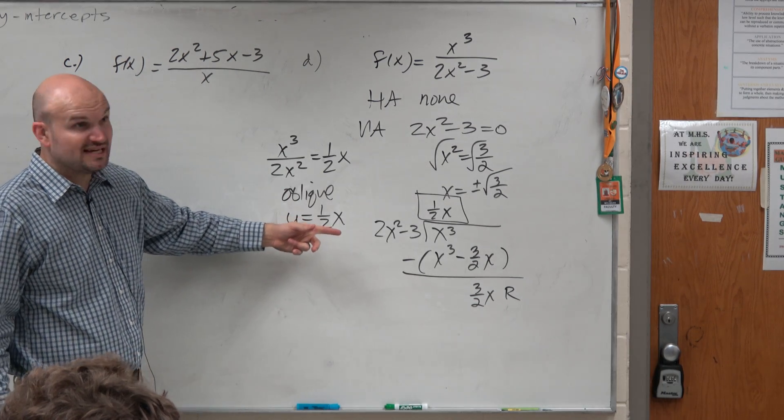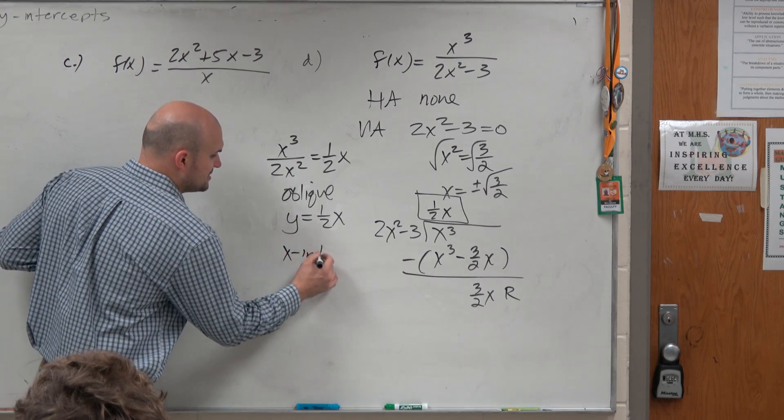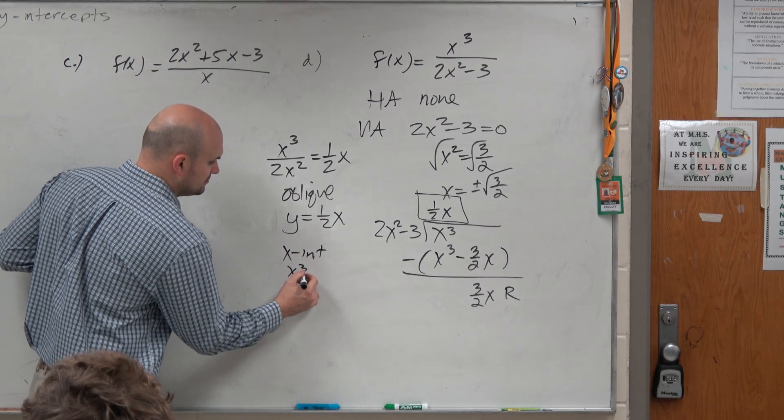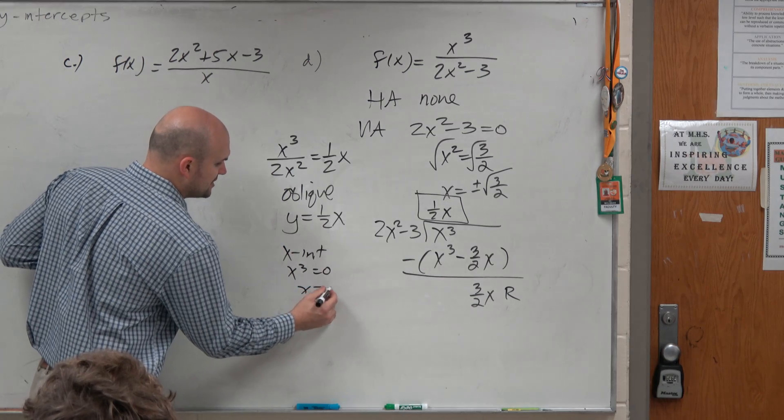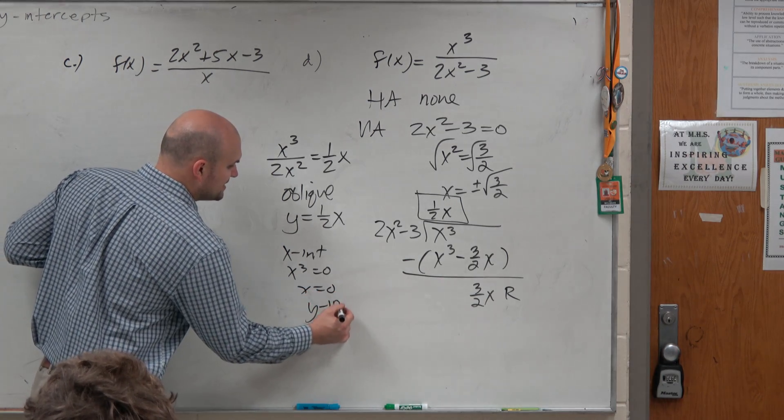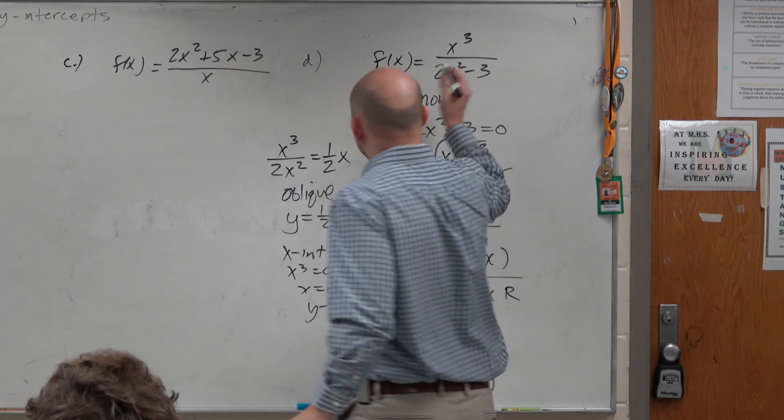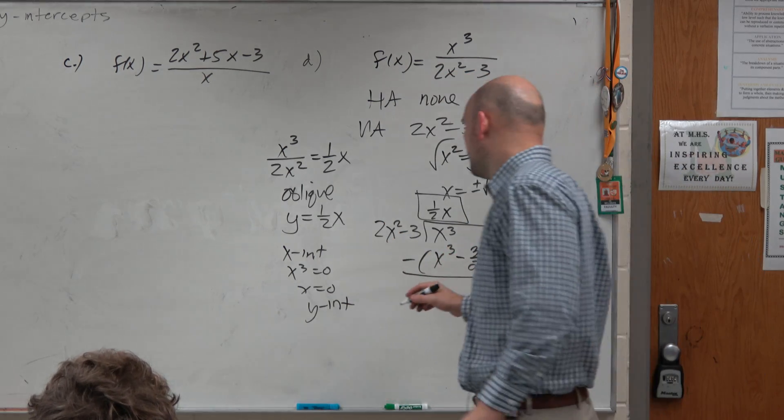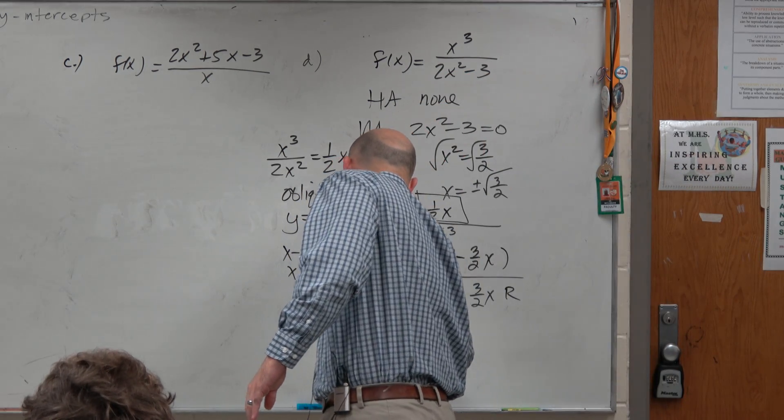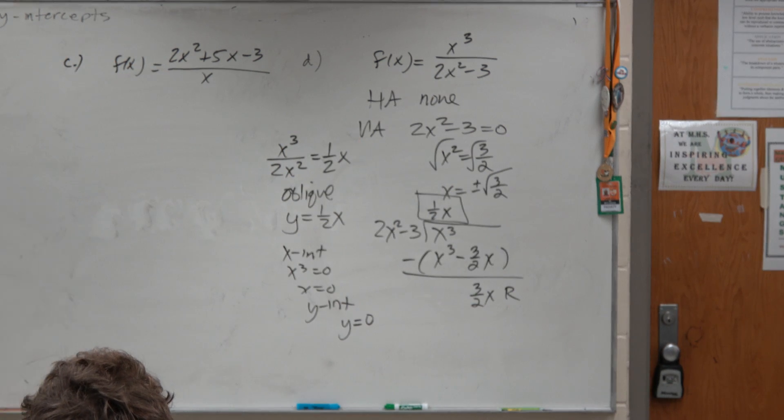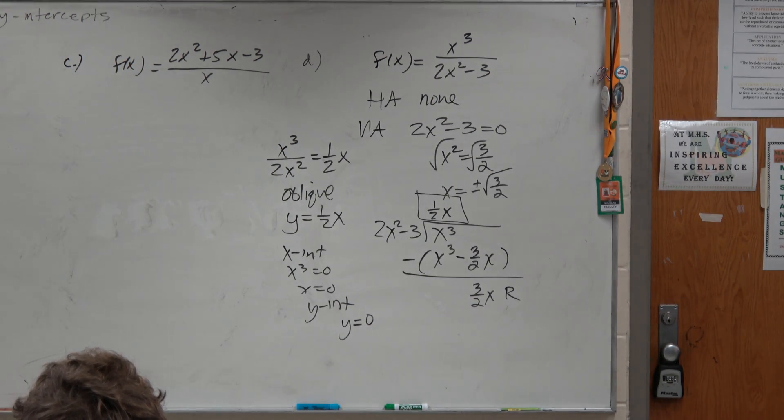Now, let's still find the x and the y-intercepts. x-intercept is when y is equal to 0. That's x equals 0. And the y-intercept is the constant over the constant, which looks like I'm going to be 0 over 3, right? So y would equal to 0. Now, is anybody confused on why I don't use the remainder?